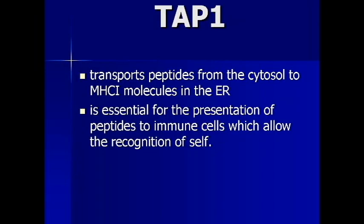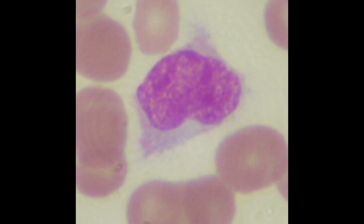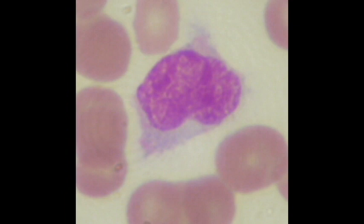The TAP transporter is composed of a heterodimer consisting of TAP1 and TAP2 transporters, both encoded in the MHC2 region of the human genome. TAP transports peptides to MHC proteins so that immune cells can distinguish between self and non-self.